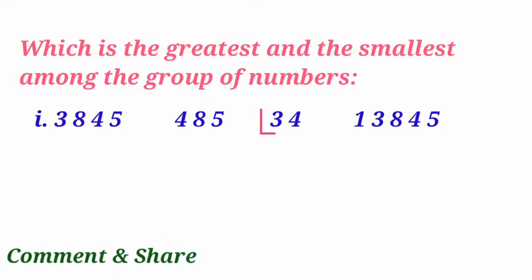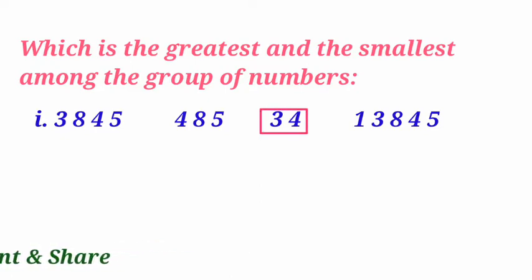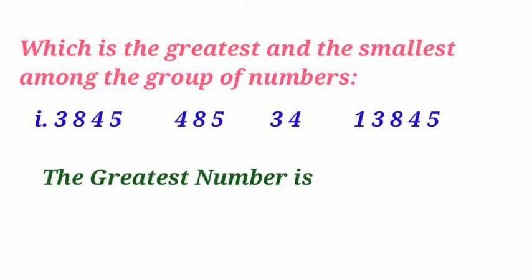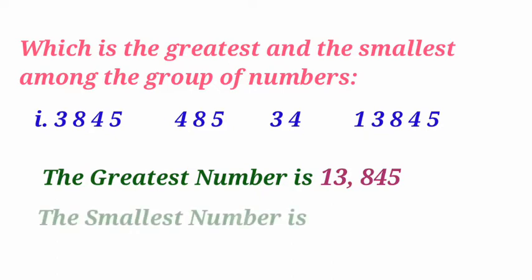And the third number, 34, consists of fewer digits than the other numbers. Therefore, the greatest number is 13,845, and the smallest number is 34.